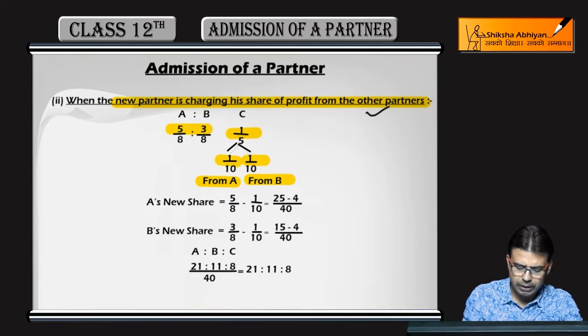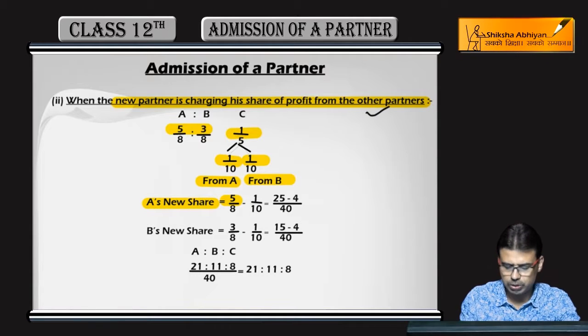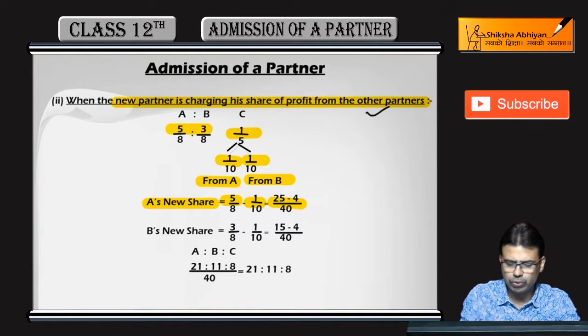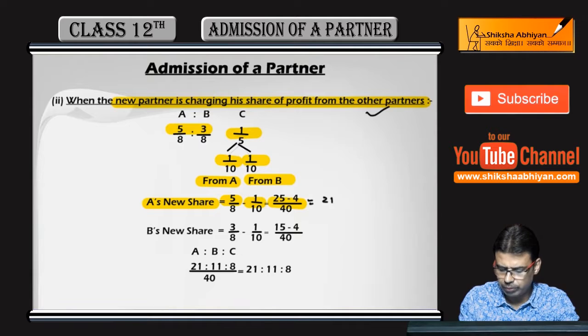A's new share will be in this case, 5 by 8 was the old share. This means that 1 by 10 he is giving to C. Balance 25 minus 4, 21 by 40.